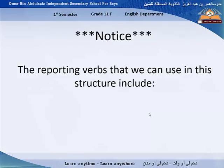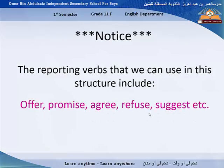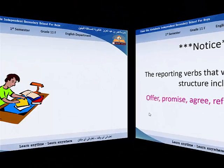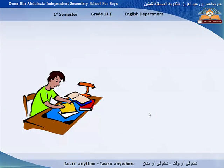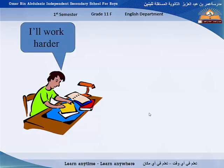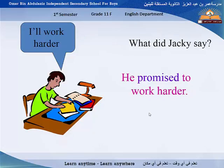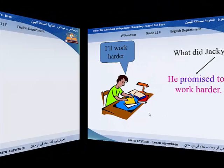The reporting verbs we can use in this structure include: offer, promise, agree, refuse, suggest, etc. For example, this person says 'I'll work harder.' What did Jackie say? He promised to work harder. So with promises, we also use 'to' plus infinitive.